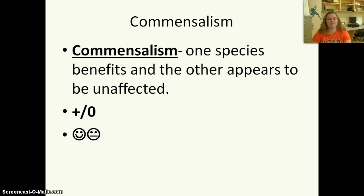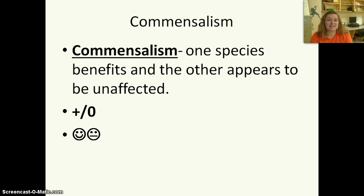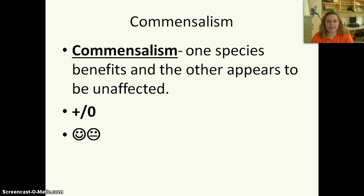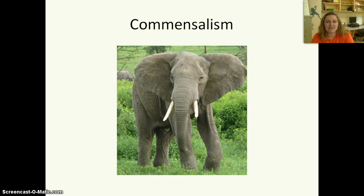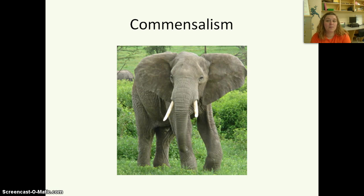Commensalism is a type of symbiosis where one species benefits and the other appears to be unaffected — a plus-null or smiling-and-indifferent relationship. A favorite example is a spider up in a tree: the spider builds his web high so that flying insects can land in it, and that doesn't hurt or harm the tree. Another example is an elephant walking along, causing bugs to jump up out of the grass, and birds come along to eat those bugs — it doesn't hurt the elephant at all.